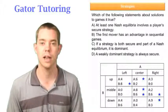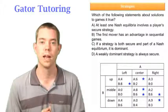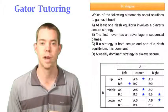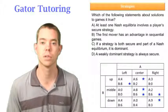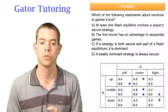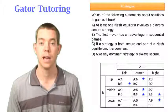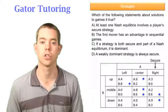For A, he can choose left, center, or right. If he chooses left, he can get 4, 0, or 4 — so 0 is the lowest. If he chooses center, he can get 6, 8, or 0 — again 0 is the lowest. If he chooses right, he can get 3, 2, or 9 — so 2 is the lowest. Since 2 is the highest minimum, right is A's secure strategy.